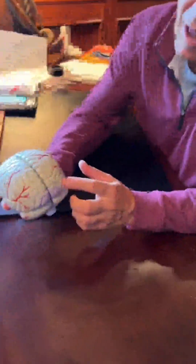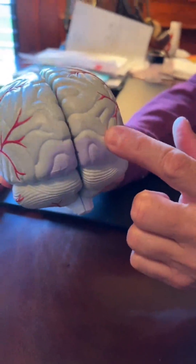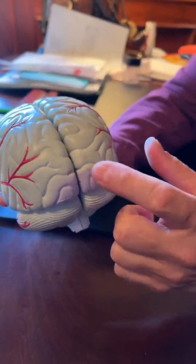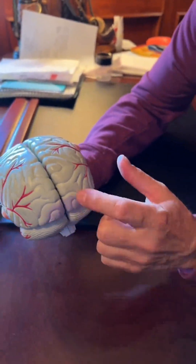Then we have the occipital lobes, which are in the very back of the brain. The occipital lobes — the visual cortex, as they're called — are in charge of seeing.